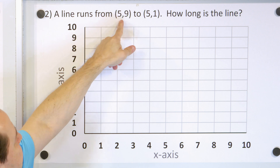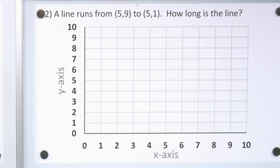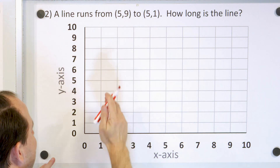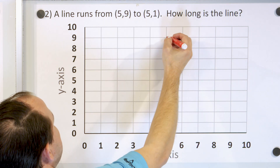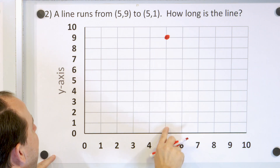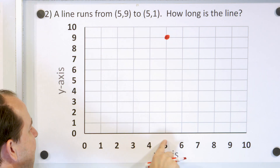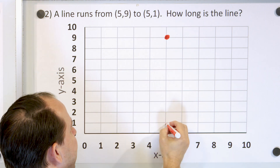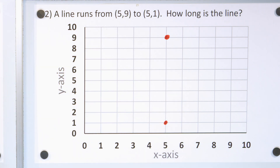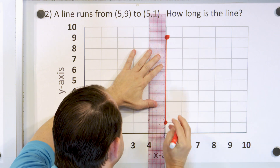Problem number two says a line runs from this point to this point. How long is the line? Same story — let's plot the points. 5,9: X is 5, right here, and then Y is 9 — 1 through 9. The point would be right here at this intersection, 5 for X and 9 for Y. Second point, 5,1: X is 5. Don't forget, X is first. And then Y is 1 — we just go up one unit, so it would be right here. That would be the endpoint of that line. Now let's go ahead and connect these so we can see what we're dealing with, and the line would look something like this.